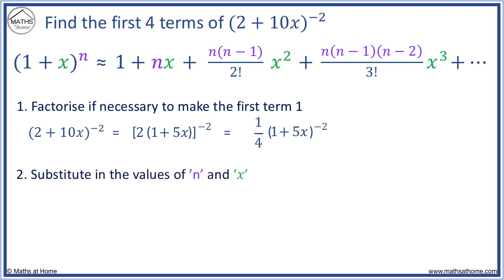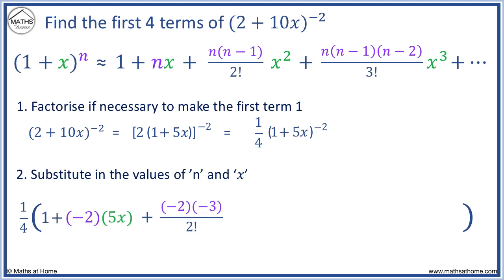We can leave (1 + 5x) inside because the first term is now a 1. Now we substitute the values of n and x into the formula. x is the second term after the 1, which for us is 5x. n is the power, which here is minus 2. We can substitute into the formula, keeping the 1 quarter in front. Our expansion becomes 1 plus nx, which is minus 2 times 5x. The second fraction becomes minus 2 times minus 3 over 2 factorial, and x squared becomes (5x) squared.